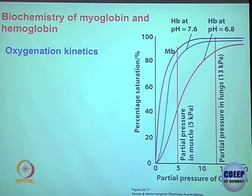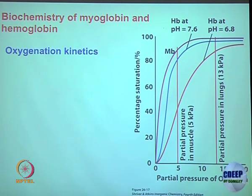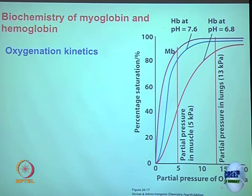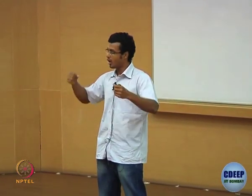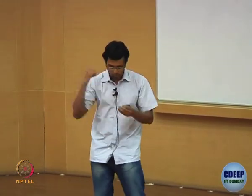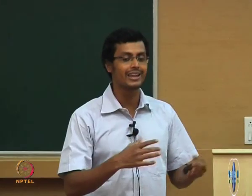As you increase the partial pressure of oxygen, oxygen uptake — percentage saturation — goes up. With more oxygen pressure the sigmoidal curve goes up and after a certain point it saturates; it will not take up any more oxygen. That means the maximum is reached — equilibrium is essentially reached — and after that no more oxygen pickup will happen. You can use pressurized or pure oxygen versus normal air with roughly 16% oxygen to measure this.